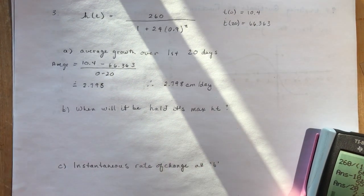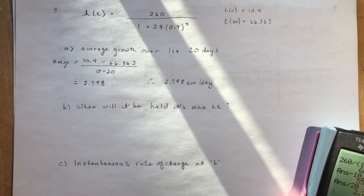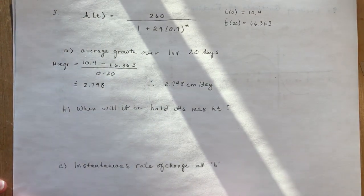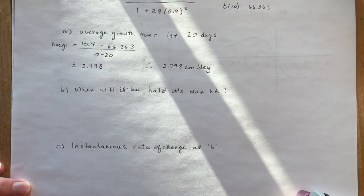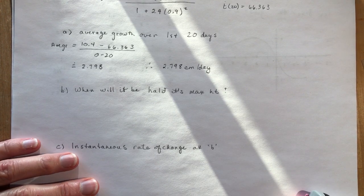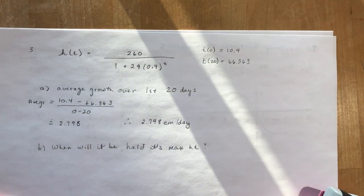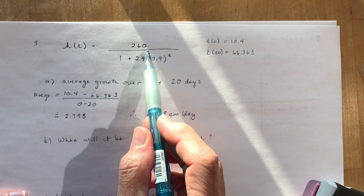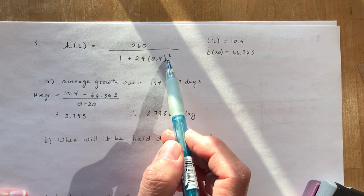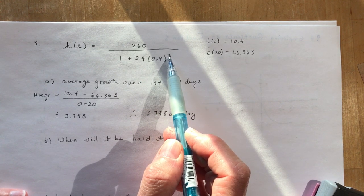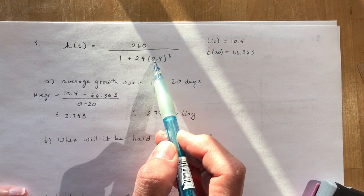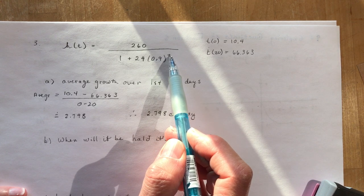When will it be at half its maximum value? We've got lots of sunshine coming in here today, which is making some shadows—hopefully that's not too annoying for you. When will it be at half its maximum height? Well, what's its maximum height? How do you know what half the maximum height is here? If you look at this equation here, the maximum height—we want to know what happens as t gets really really big, right?